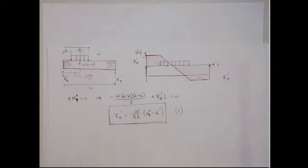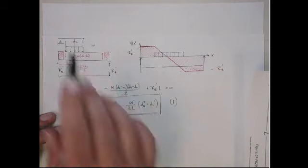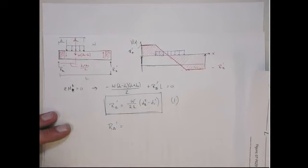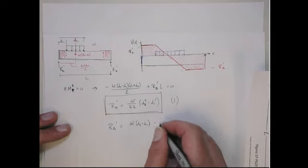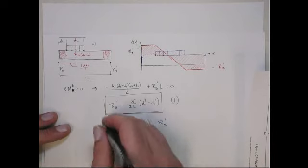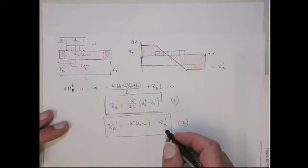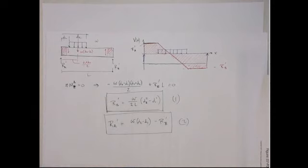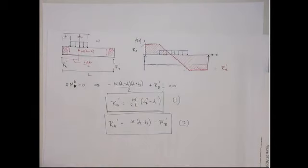From sum of forces in the Y direction equal to zero: R_A plus R_B must equal the total downward load. So equation 1B gives R_A prime equal to W times (D2 minus D1) minus R_B prime. We first compute R_B prime using equation 1A and use that result here to compute R_A prime — these are well-posed sequential steps. Knowing those two reaction forces, I can draw the shear diagram.